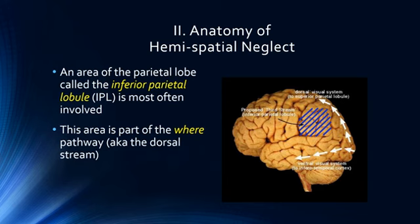The attentional networks involved in hemispatial neglect are situated adjacent to the dorsal visual stream — which is, of course, the where pathway — and the ventral visual stream, which is the what pathway. This third stream is possibly part of visual attention. In the next lecture we'll talk about how this is the part of the brain involved in orienting us to specific places in space as we are trying to find things in our visual environment.